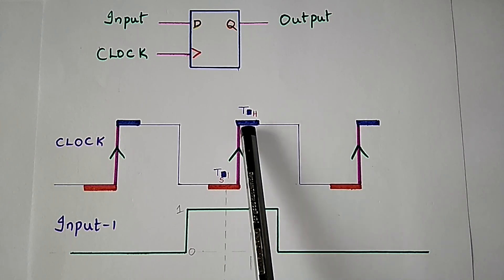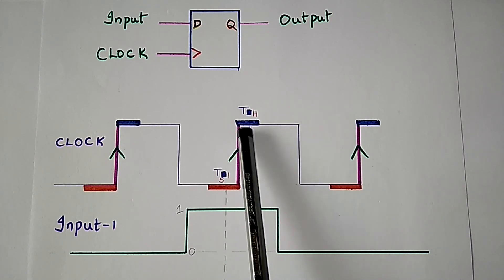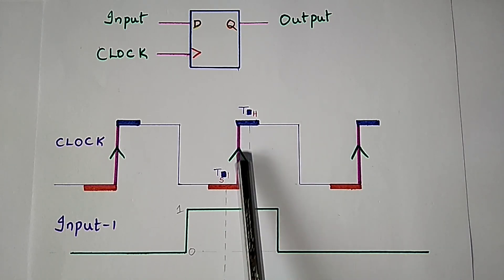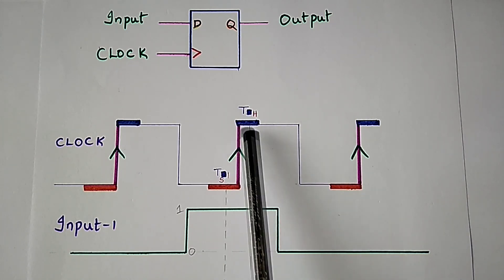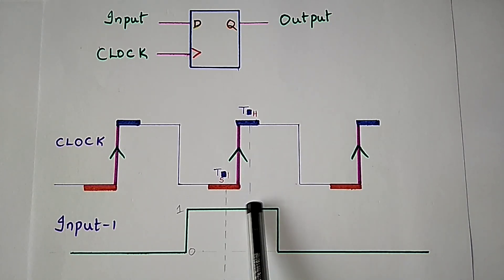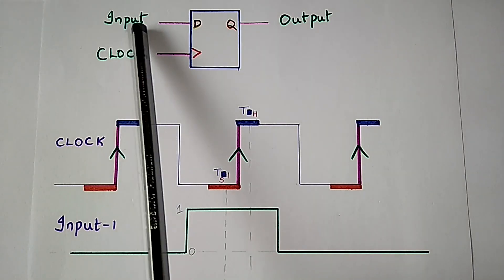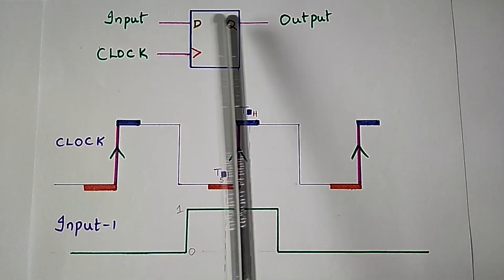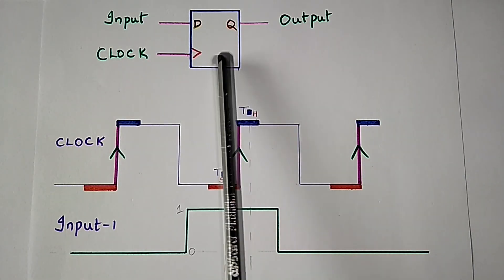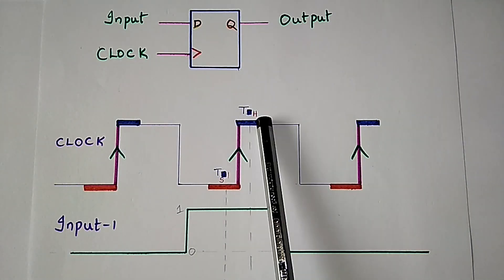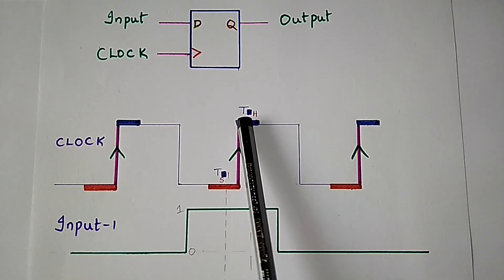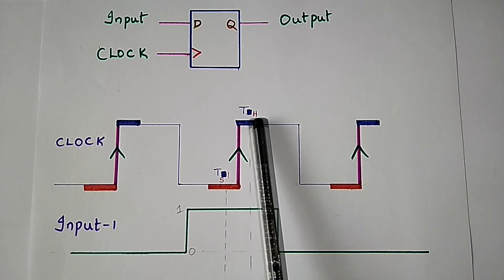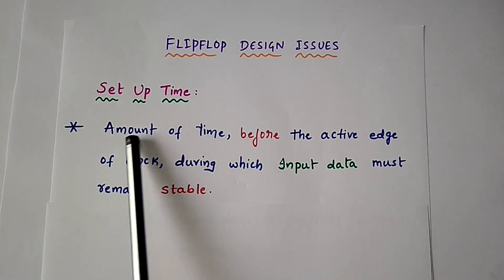Hold time (th) is the amount of time after the active edge of the clock during which the input data should remain constant, so that the input data is successfully stored by the flip-flop.